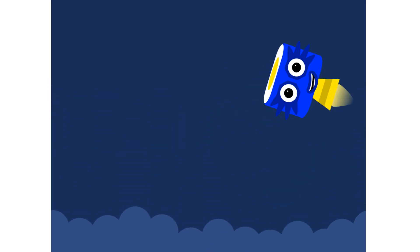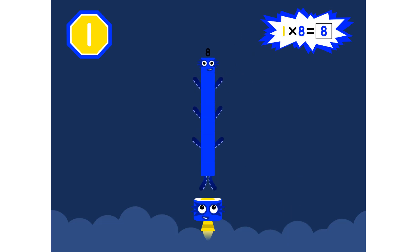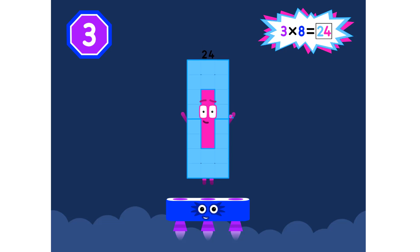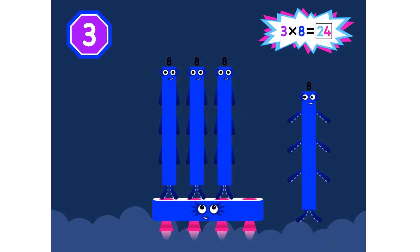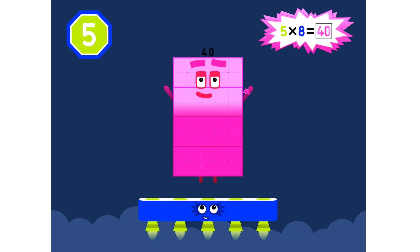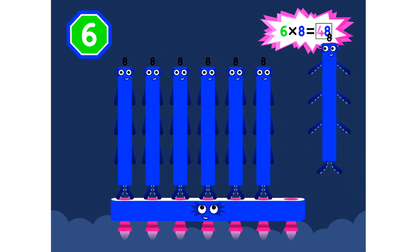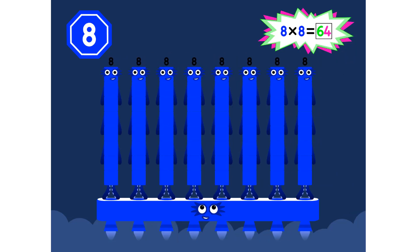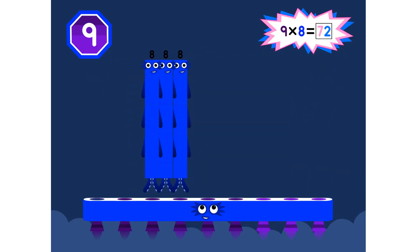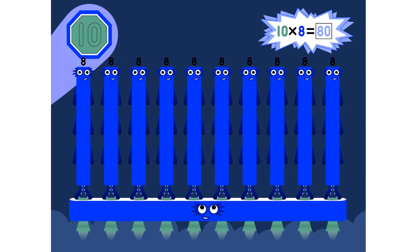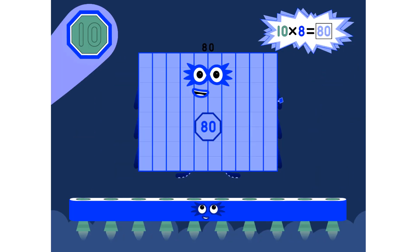Super 8s assemble! 1 eight is 8, 2 eights are 16, 3 eights are 24, we will heed the call. 4 eights are 32, 5 eights are 40, 6 eights are 48, we'll catch you when you fall. 7 eights are 56, 8 eights are 64, 9 eights are 72, here's the biggest of them all, the super 8 who has it all, 10 eights are 80.